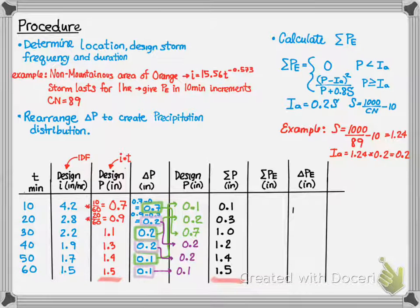So, now we're ready to do our summation of excess precipitation column. For the first one, it is going to be 0. And the reason it's 0 is because 0.1 is less than 0.2. 0.3 is greater than 0.2. However, when you plug it into the equation, you get a value so small that it is pretty much 0. Next, since 1 is greater than 0.2, we use the equation above: P minus Ia squared divided by P plus 0.8 S, and we get 0.83. We're going to repeat this for the remaining 1.2, 1.4, and 1.5. There are slight losses even though the numbers match the previous column. The reason they're almost identical is because of rounding.